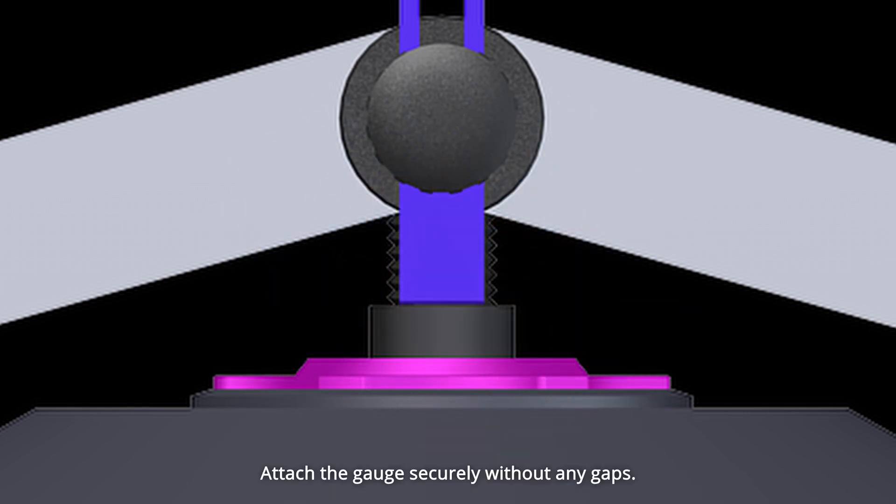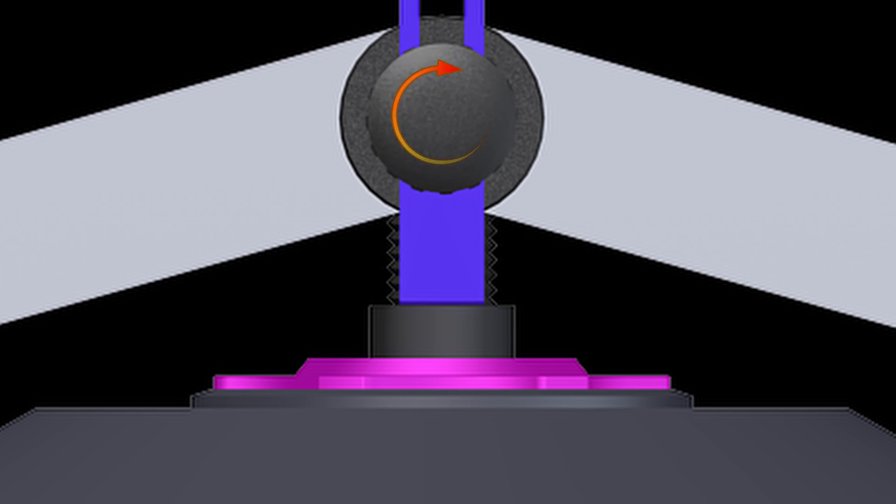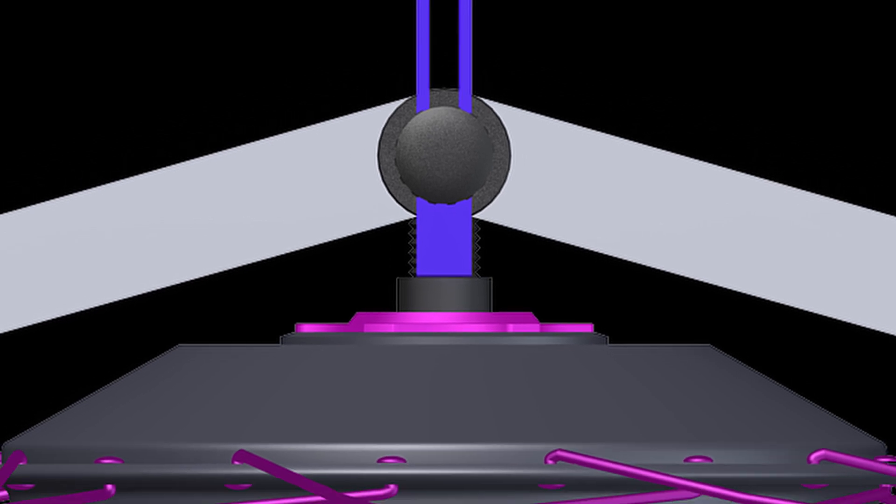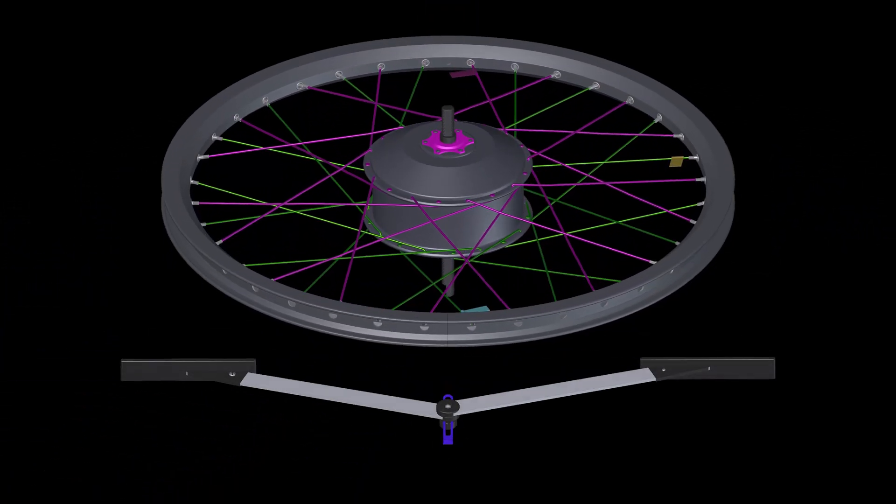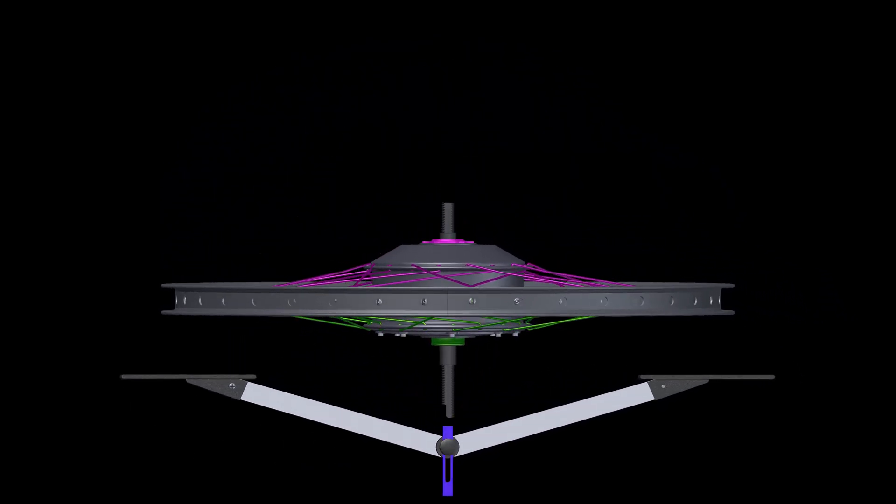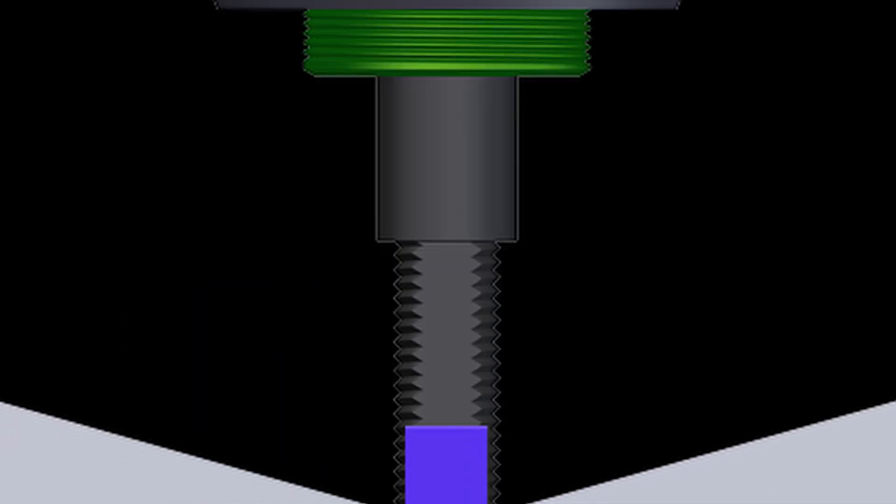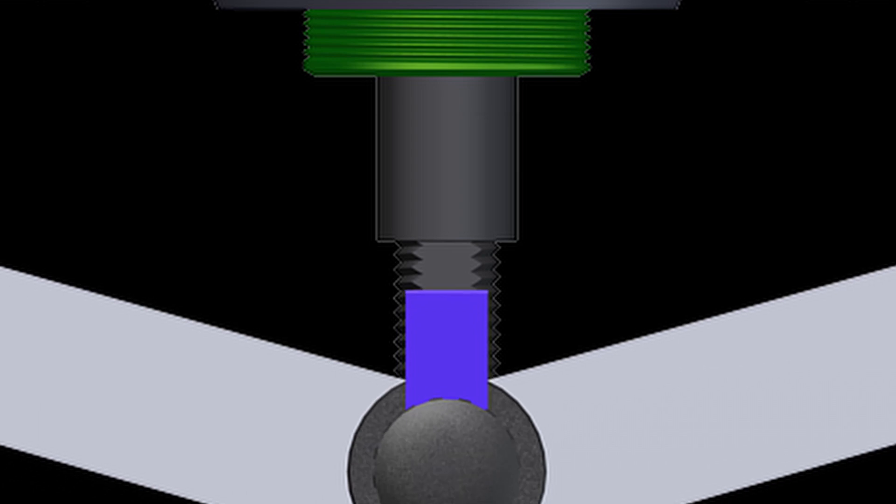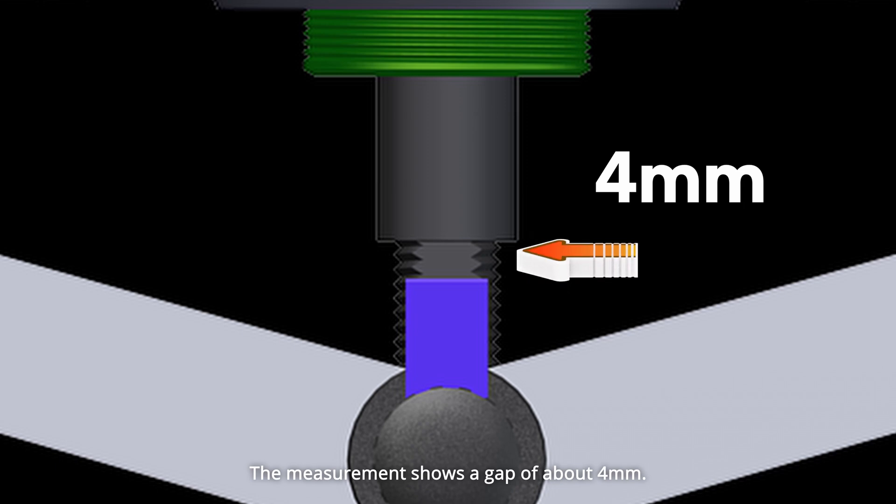Attach the gauge securely without any gaps. Now, fix the gauge in place. Move the dishing tool to the opposite position. The measurement shows a gap of about 4mm.